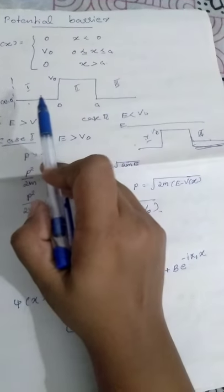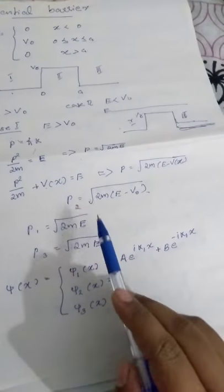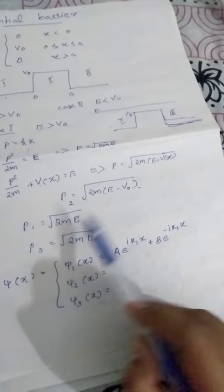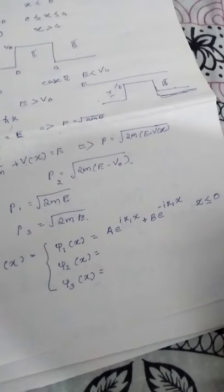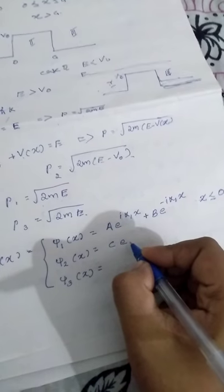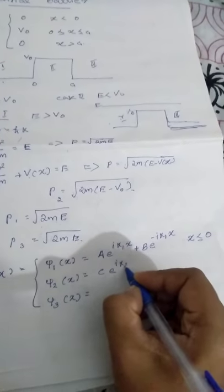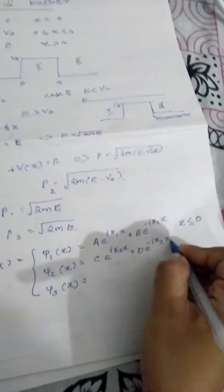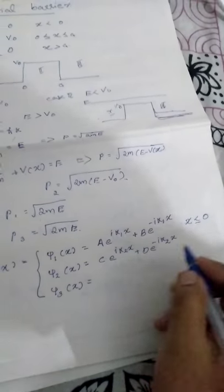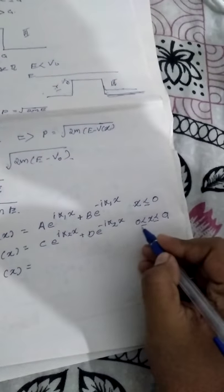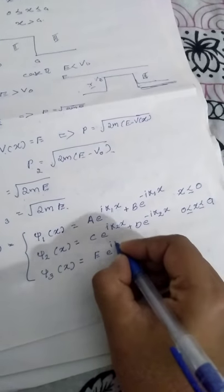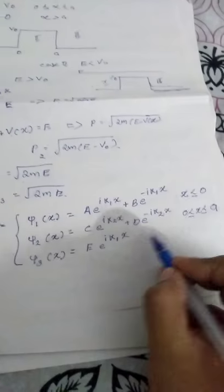K1 is the wave vector in region 1, with value K1 equals root of 2mE divided by h-bar squared. The wave function in region 1 is psi1 equals A·e^(iK1x) plus B·e^(-iK1x). In region 2, psi2 equals C·e^(iK2x) plus D·e^(-iK2x), where K2 equals root of 2m(E minus V0) divided by h-bar squared. Since K1 equals K3, region 3 has psi3 equals E·e^(iK1x) plus F·e^(-iK1x).